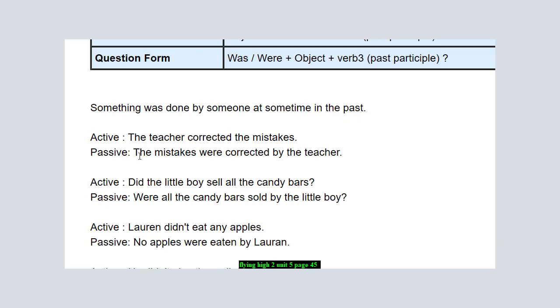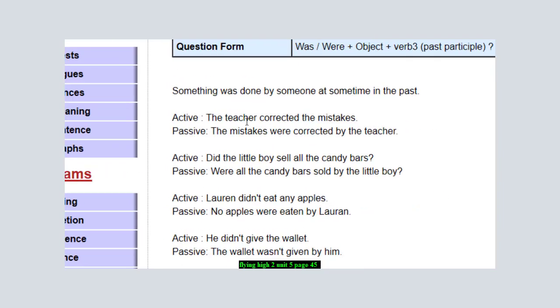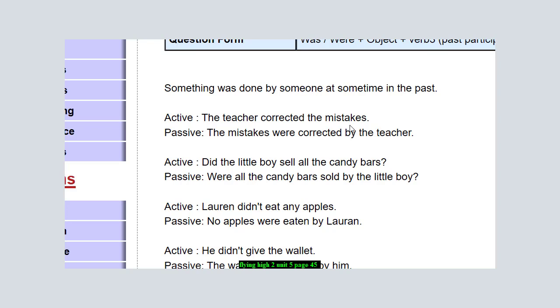Let's take the example here: 'The teacher corrected the mistakes.' Notice here 'corrected' is in the past simple. When we identify, 'the teacher' is the subject, 'corrected' is the verb, 'the mistakes' is the object. In the passive, instead of one, two, three, make it three, two, one.